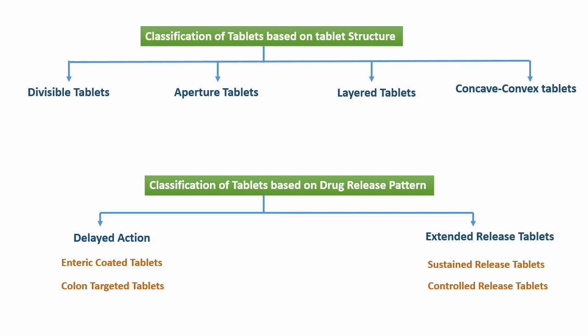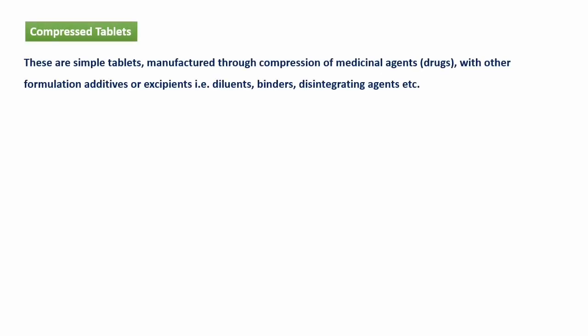Now I will give you some details of all these types of tablets. Compressed tablets — ये सबसे simple type की tablets होती हैं जिन्हें बनाने के लिए drug या therapeutic compound और other excipients को tablet formula के according mix किया जाता है, और tablet punch machine के through compress करके tablets को formulate किया जाता है।